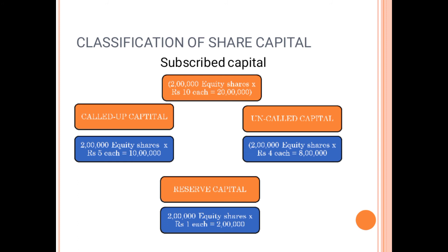Coming back to subscribed capital — the example gives 2 lakh equity shares into Rs. 10, meaning 20 lakh is the subscribed capital where the public is ready to purchase. The subscribed capital is again divided into three parts: called up capital, uncalled capital, and reserve capital. The previous terms — issued capital, authorized capital, subscribed capital, unissued and unsubscribed capital — depend on how many equity shares are purchased.